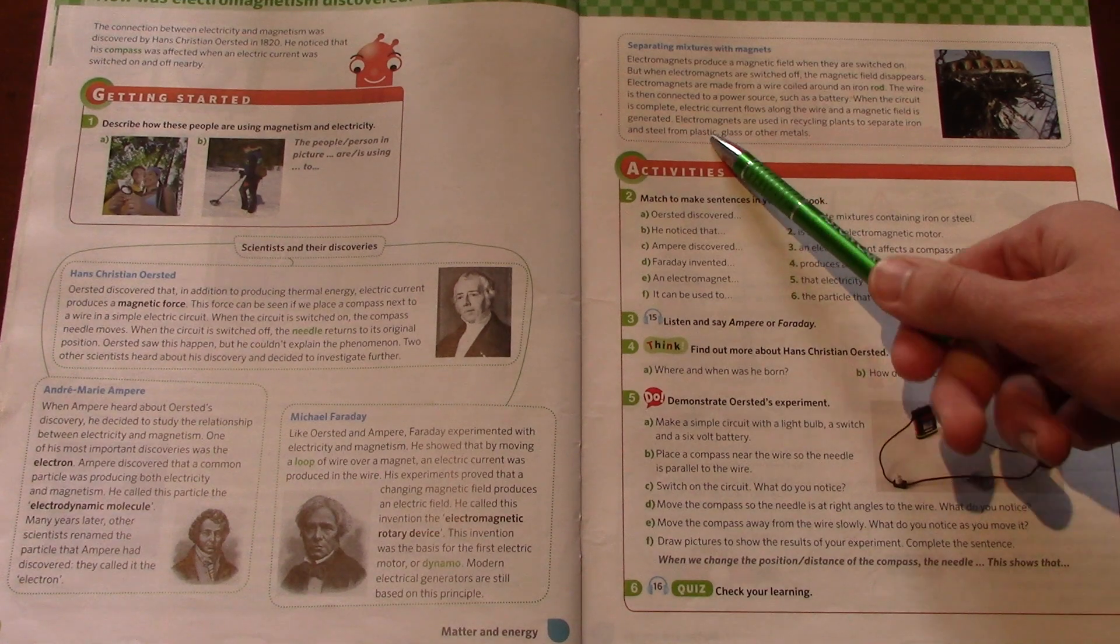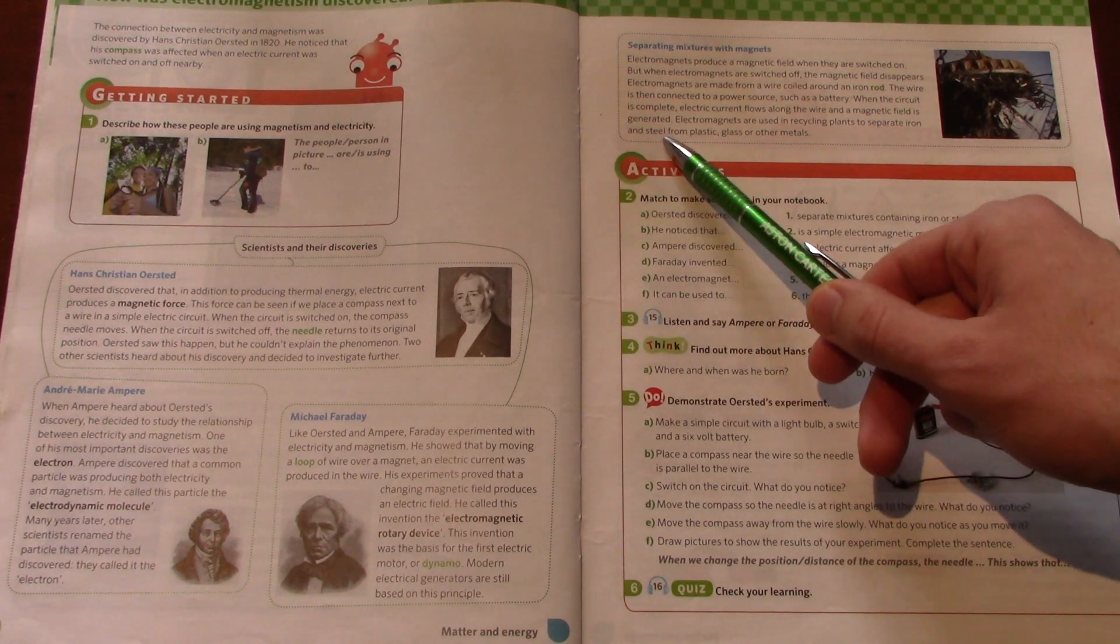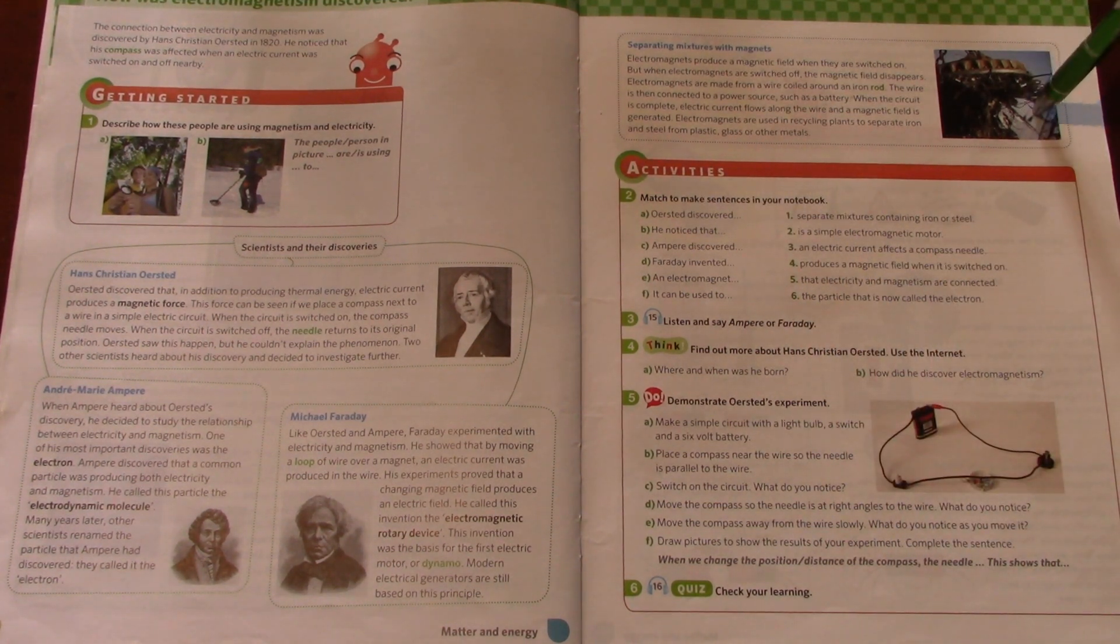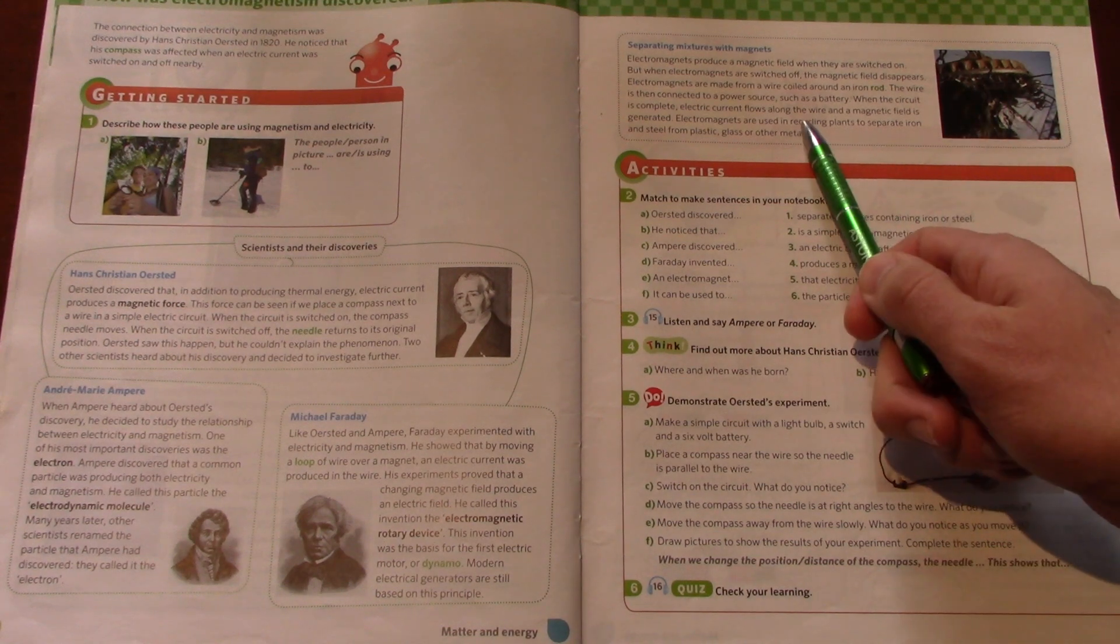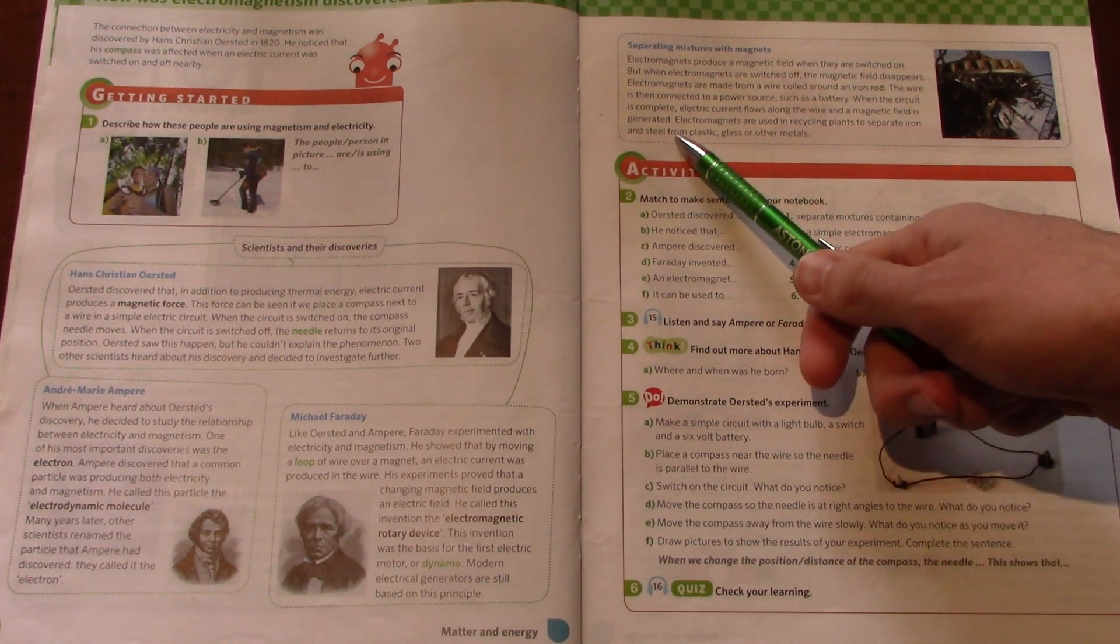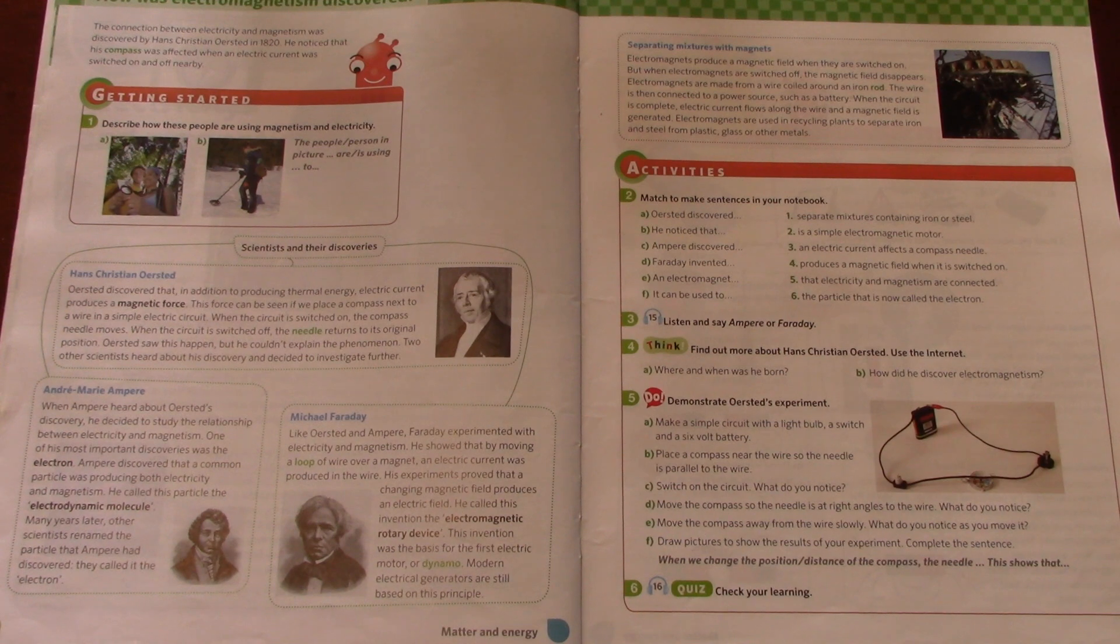Electromagnets are used in recycling plants to separate iron and steel from plastic, glass, or other metals. So this picture is most likely at a recycling plant and is used to separate metals from plastic, glass, or other metals that may not be magnetic or recyclable.